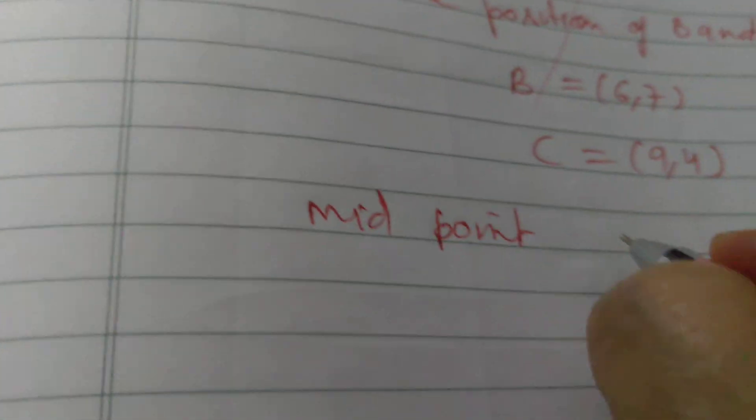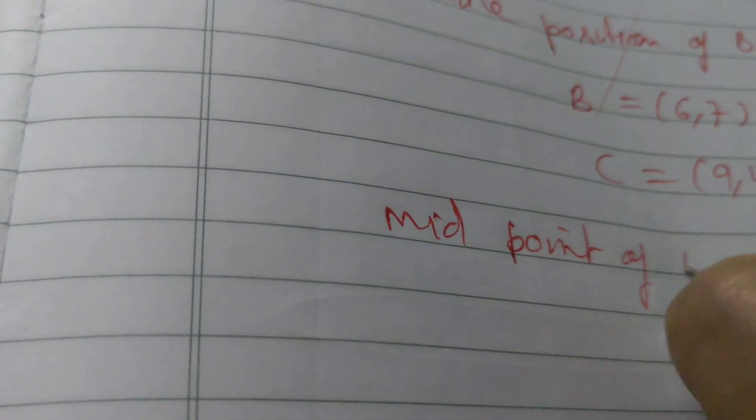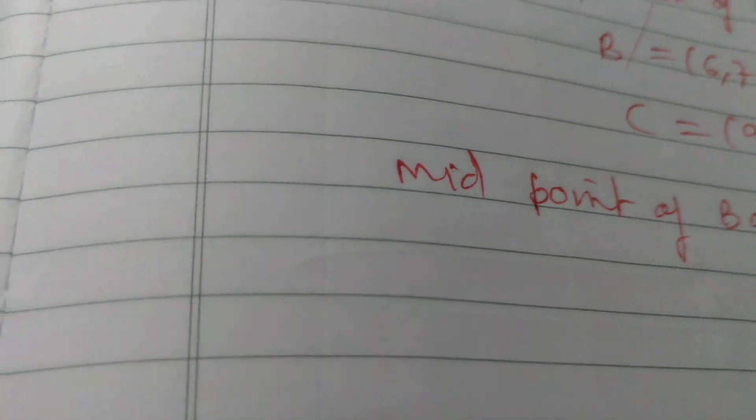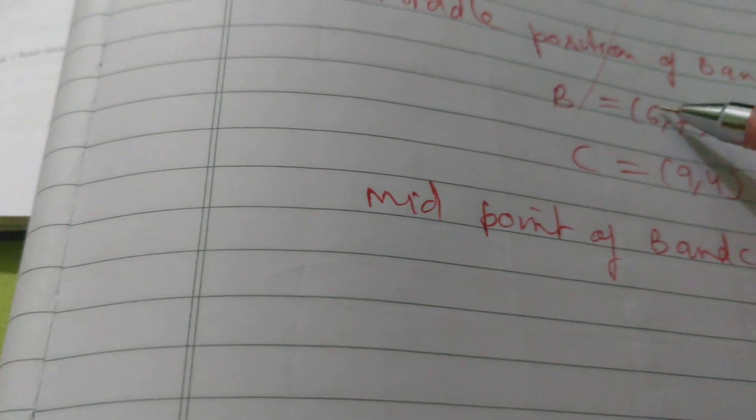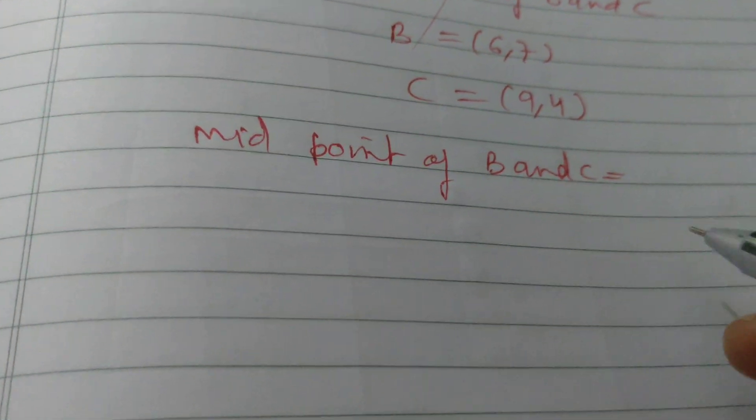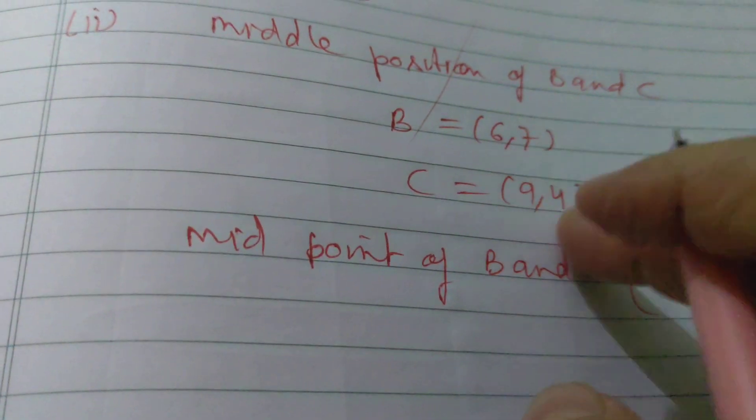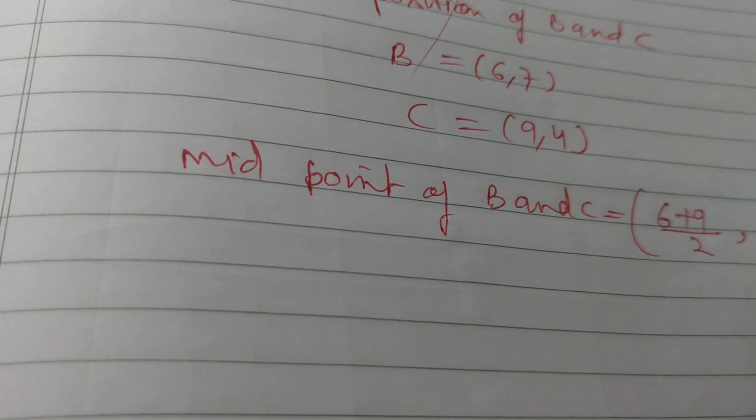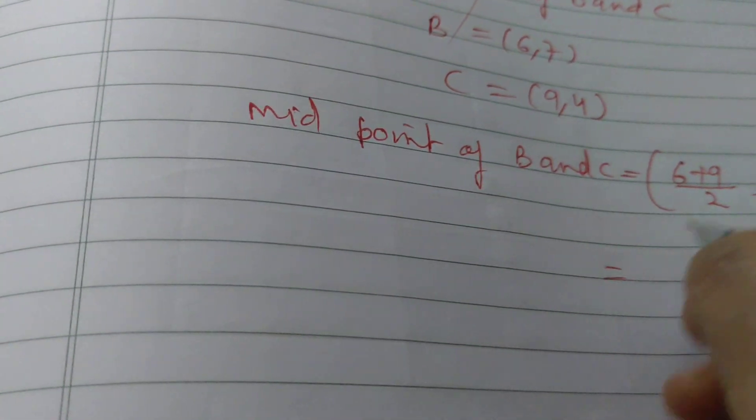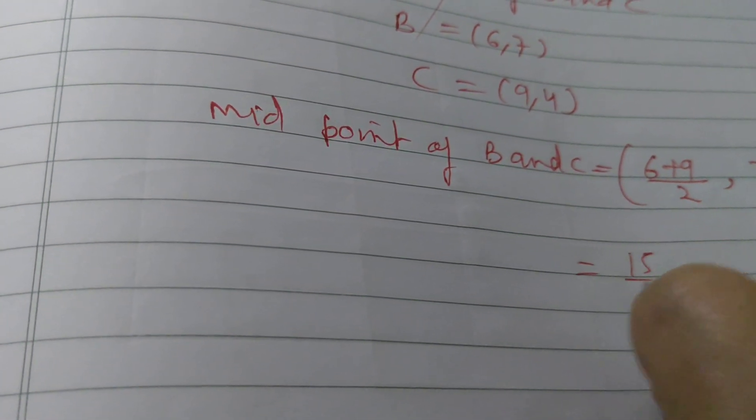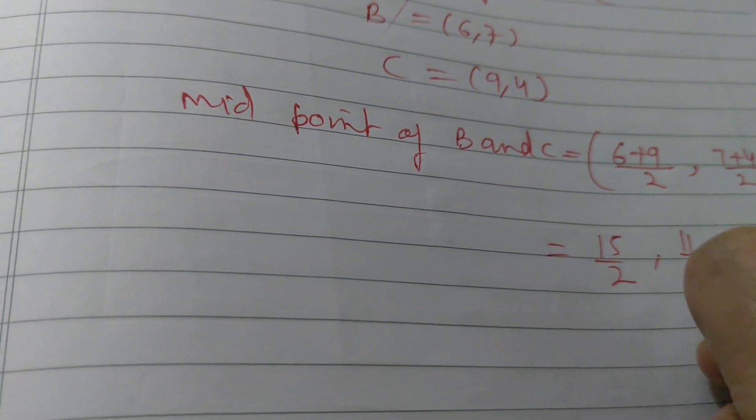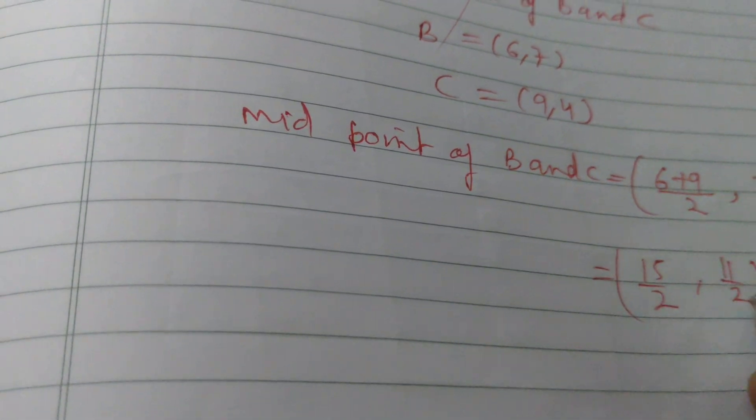Ab humko kahan nikalna hai? Midpoint of B and C. To kya ho gaya, dekho, ye pehla kya hai? 6 aur ye 9. To pehle hum in dono ko, 6 plus 9 divided by 2. Aur dusra 7 aur 4, to 7 plus 4 divided by 2. To humko kya ho gaya? 9 aur 6, 15, 15 upon 2. Aur ye 11 by 2. Ye hum in dono ke midpoint nikal gaya.